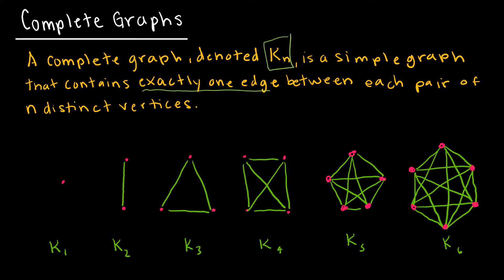K2 is two vertices connected by one edge. K3 is three vertices. K4 has four vertices, and notice each one is connected to each other one.